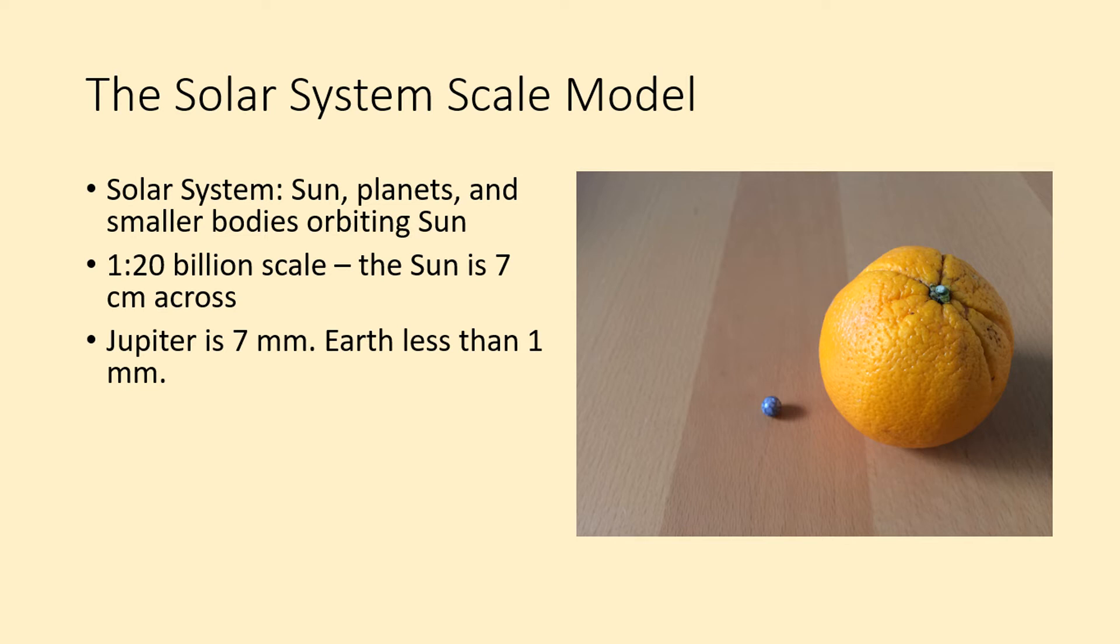One is the real distance expressed in astronomical units. An astronomical unit is the average distance between the Earth and the Sun. The other is distances for our particular model scale.